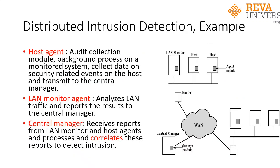This is an example of a distributed intrusion detection system developed by the University of California, Davis. Looking at the diagram, the architecture comprises a central manager, a LAN monitor, and hosts. There is an agent module within the host, an agent module within the LAN monitor, and a manager module within the central manager. A router connects the central manager to a LAN through the wide area network (WAN). There are three major elements: host agent, LAN monitor agent, and central manager.